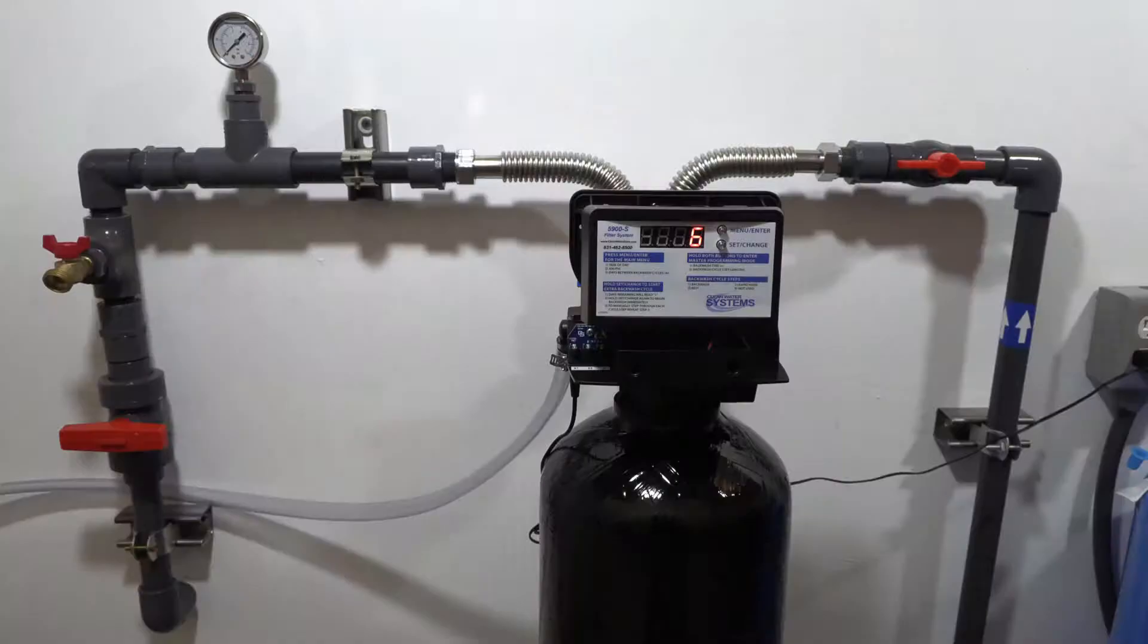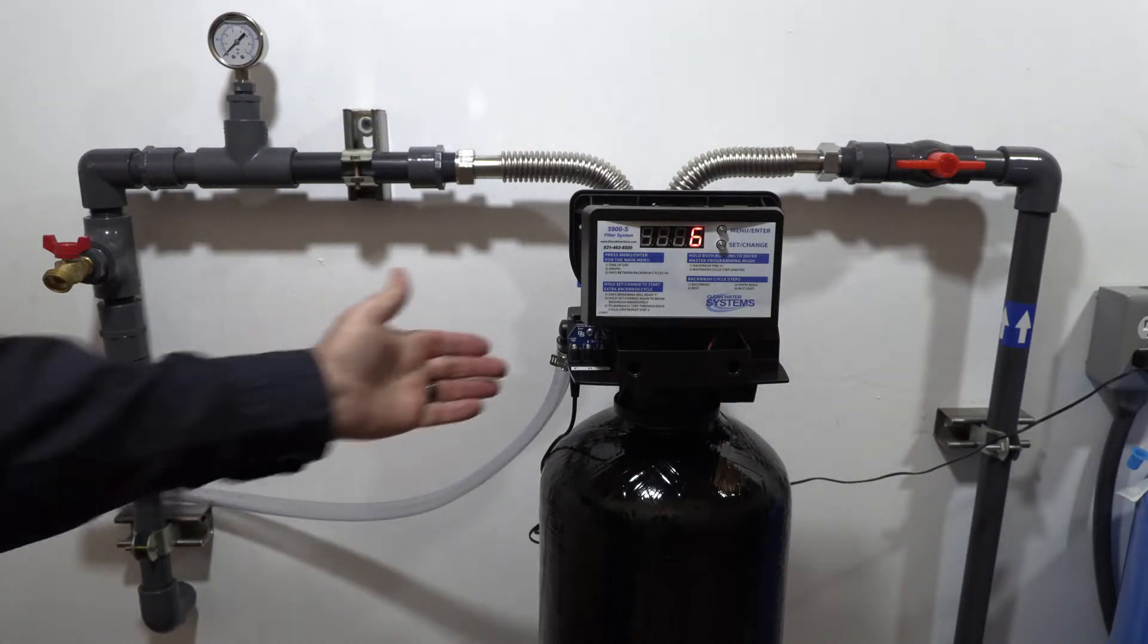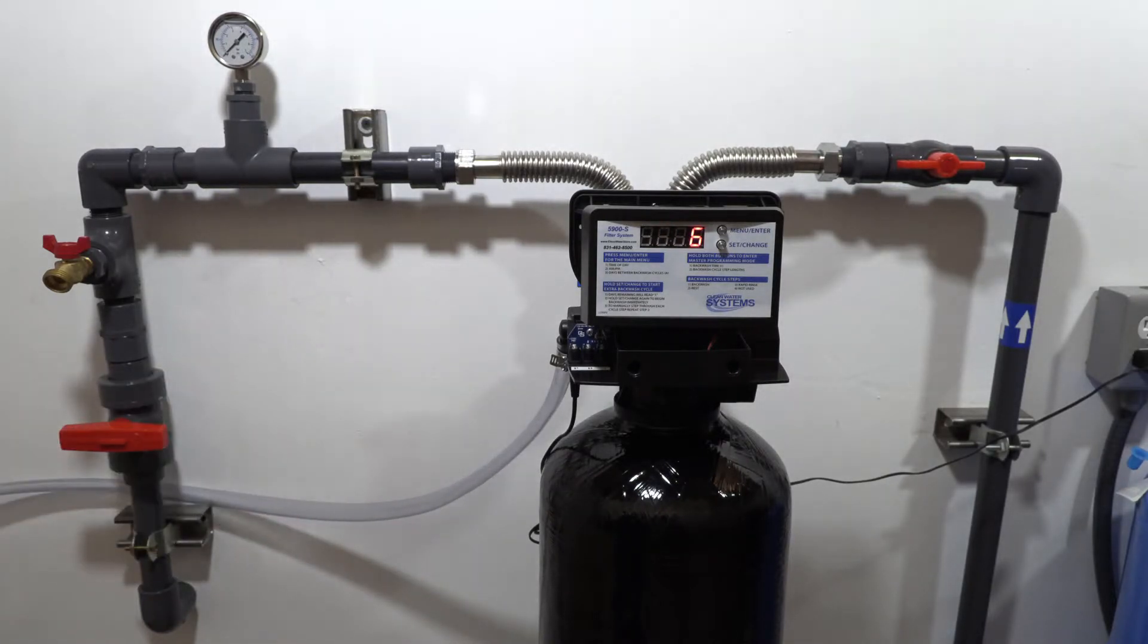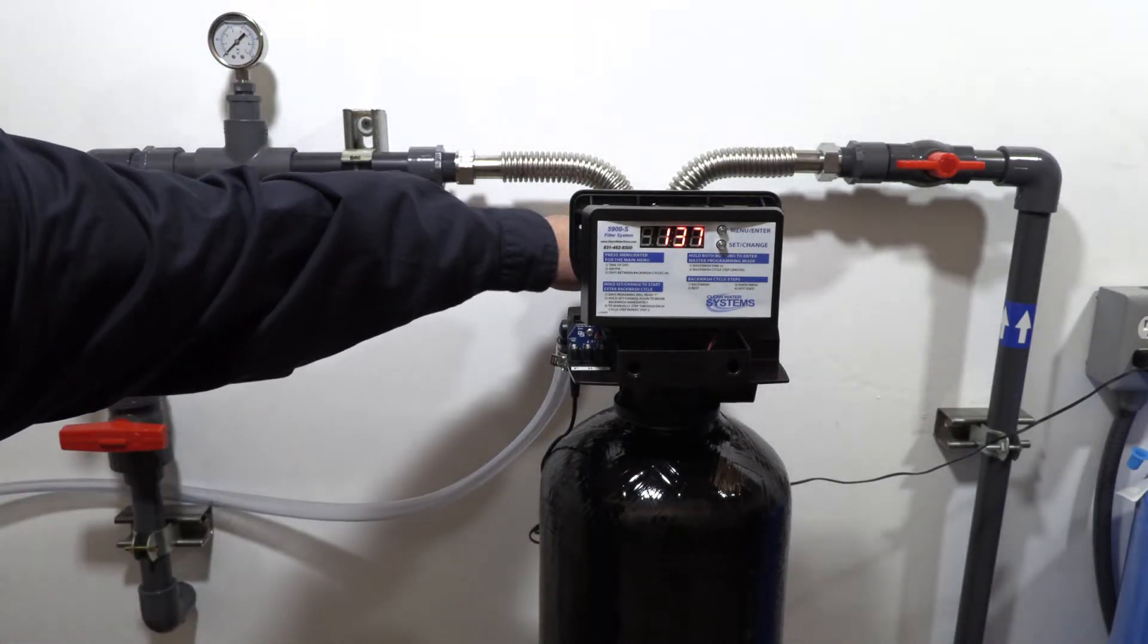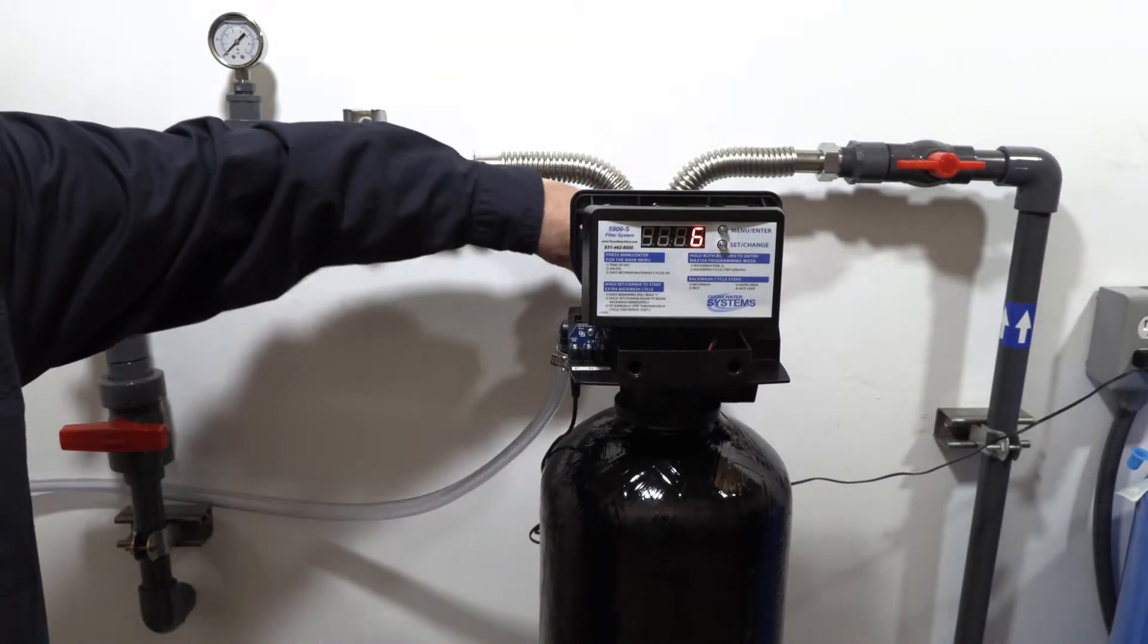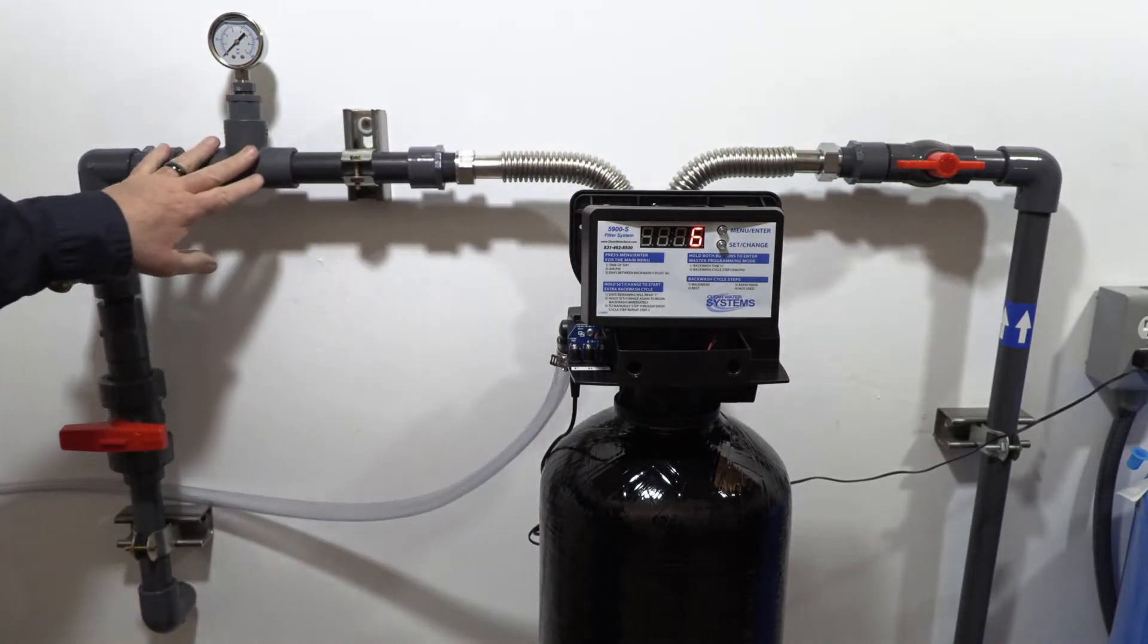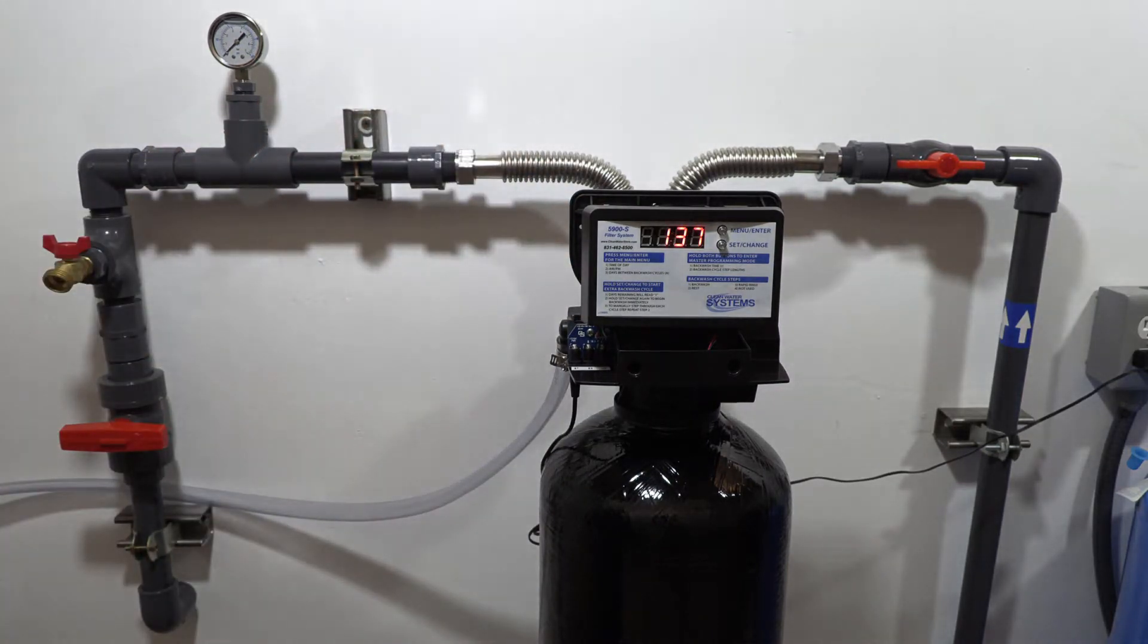Okay, so now that we've performed two or three or four backwashes, as many as it takes, and you've got clean water coming out your drain tube here, we're going to go ahead and open our outlet valve on the bypass valve, which now brings the rest of the system up.